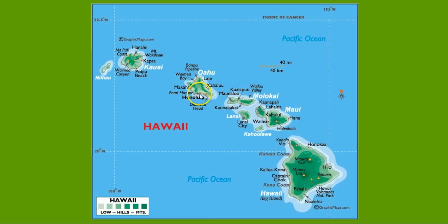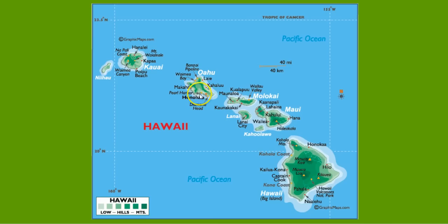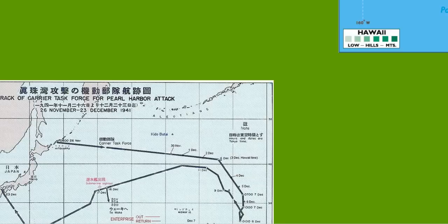Here's a map of Pearl Harbor, which is on the island of Oahu. And here is a schematic of the Japanese plans for the attack on Pearl Harbor.